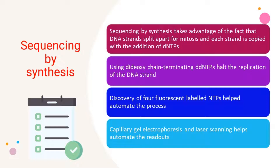Sequencing by synthesis takes advantage of the fact that DNA strands split apart for mitosis and each strand is copied with the addition of DNTPs. Using dideoxy chain-terminating DDNTPs halts the replication of the DNA strand. Incorporation of four fluorescent-labeled NTPs helped automate the process, where the readout from capillary gel electrophoresis is facilitated by laser scanning.